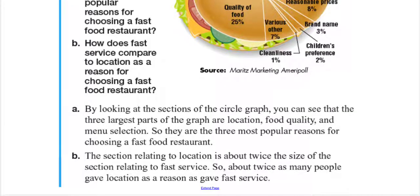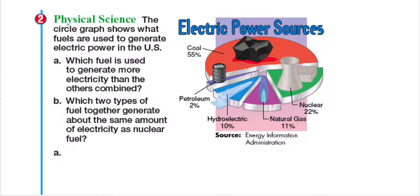Let's take a look at example number two. The circle graph shows what fuels are used to generate power in the United States. This is a 3D circle graph: coal 65%, petroleum 2%, hydroelectric 10%, natural gas 11%, and nuclear power 22%. This 3D circle graph is visually attractive and generates more interest. Which fuel is used to generate more electricity than all others combined?